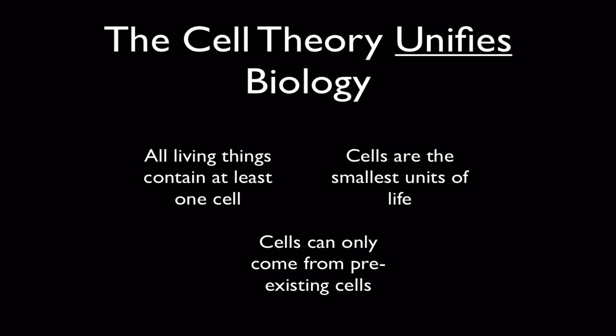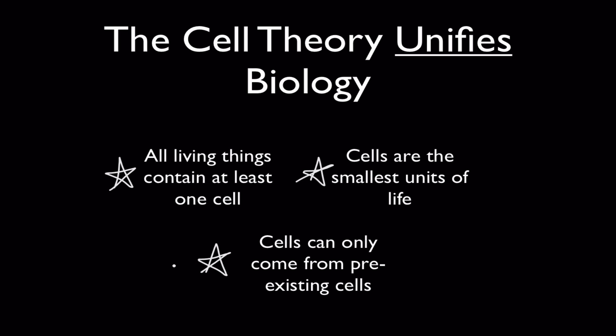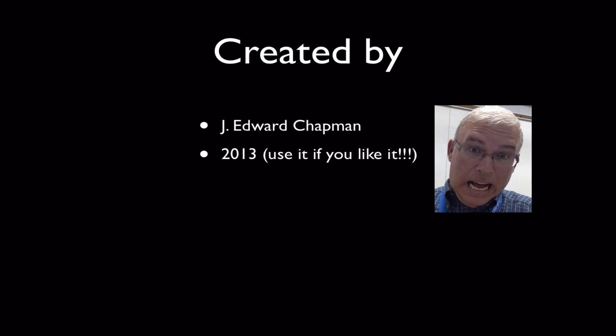The cell theory unifies biology and is considered one of the main theories in the entire discipline — it makes a lot of things make sense. Maybe one day, if we discover life somewhere else in the universe that isn't cellular, we'll have to change it. But for right now, we know that all three ideas are true: all things contain at least one cell, cells are the smallest units of life and can't be broken up without killing them, and all cells come from pre-existing cells. Thanks for listening.